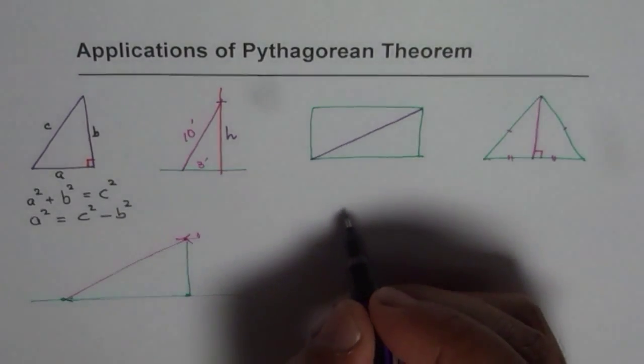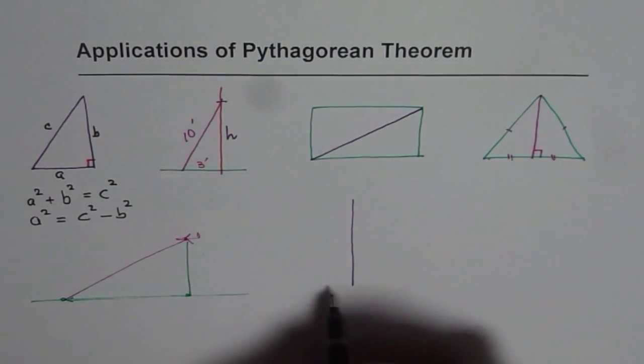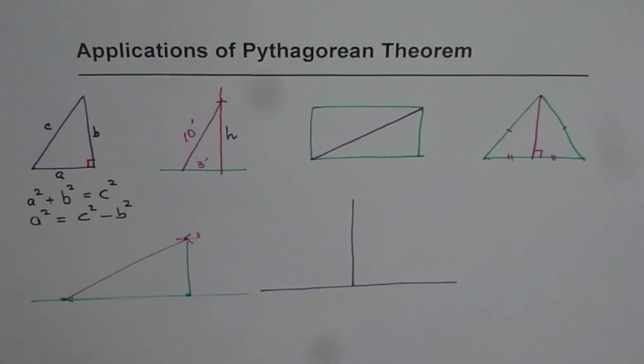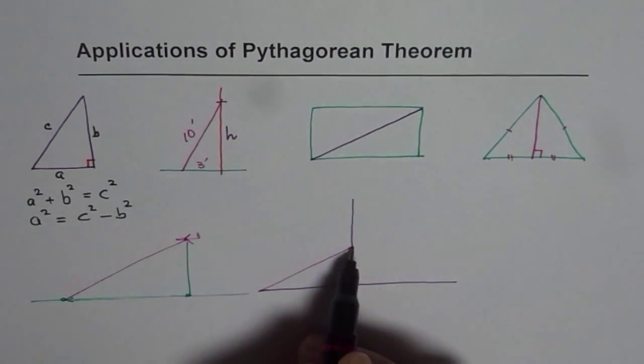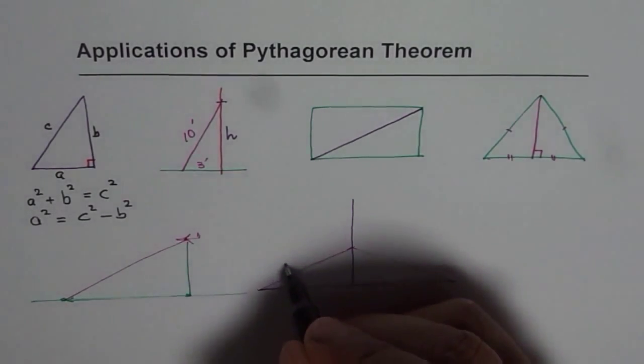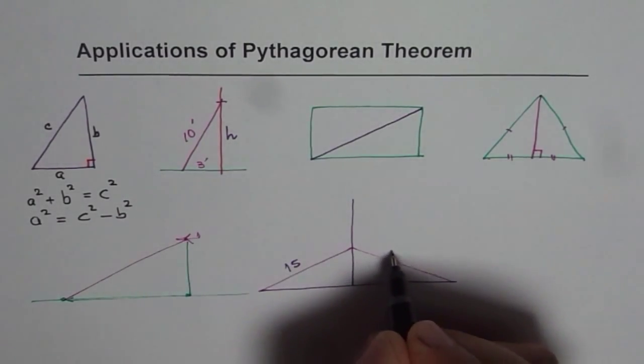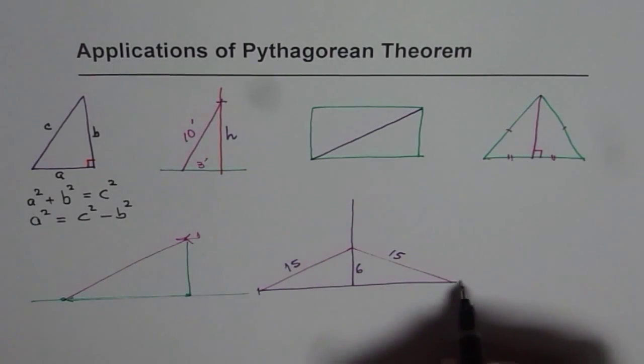In many applications you can solve complicated questions where more than one triangle is involved. Let us say you know that this is the roof and you know the span. For example, if this is 15 units and 15 units, and the height is 6 units, then what is the span?